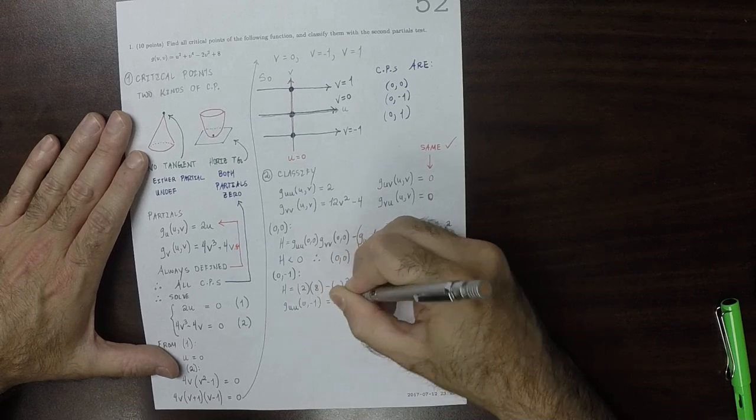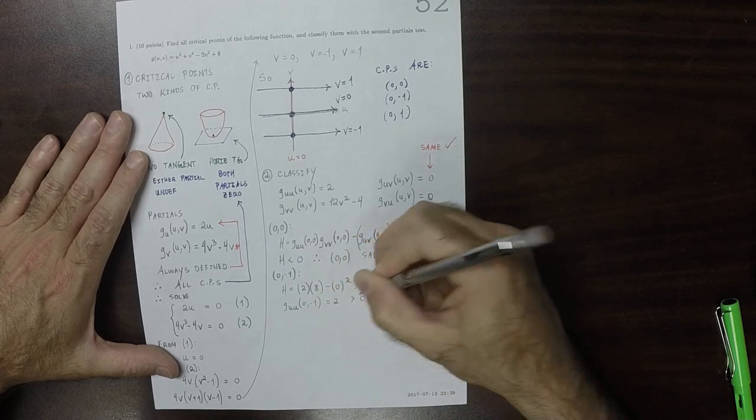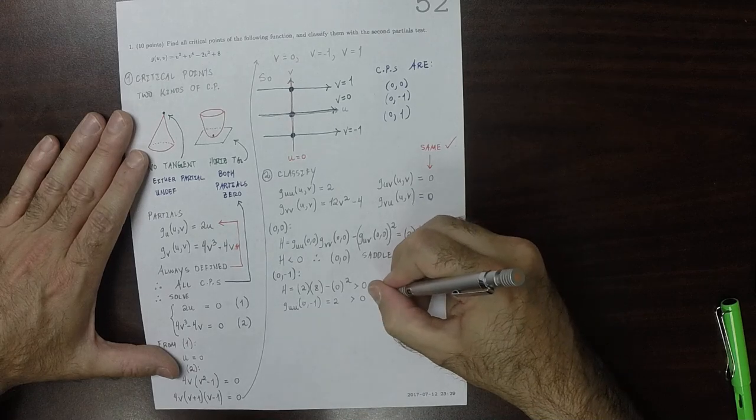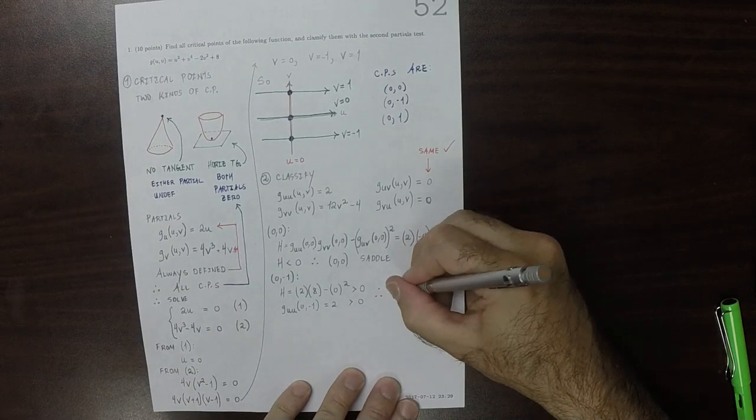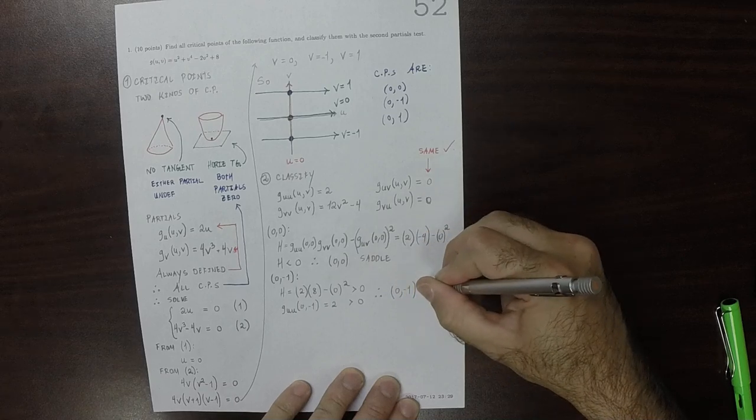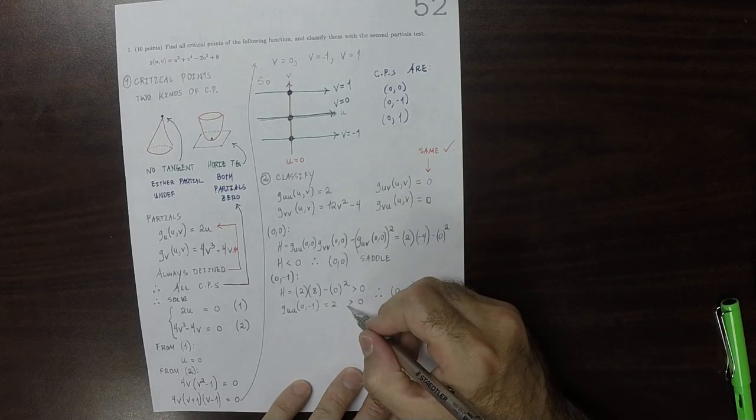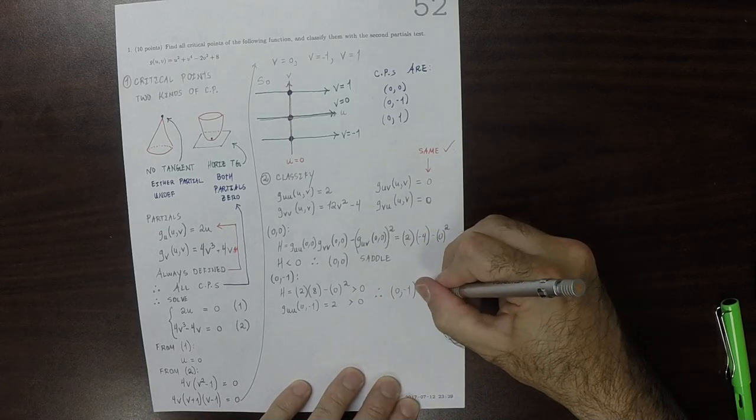well, the U, U one is two, which is positive. So as a result of that, zero, negative one is a, because that's positive, that means that this is a min.